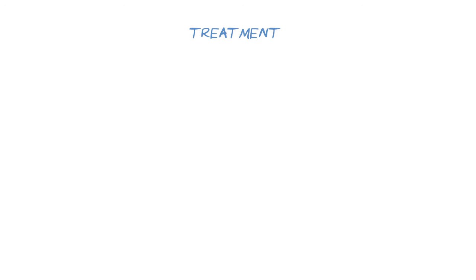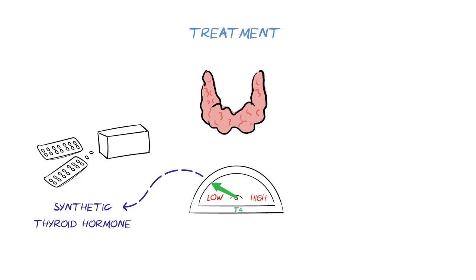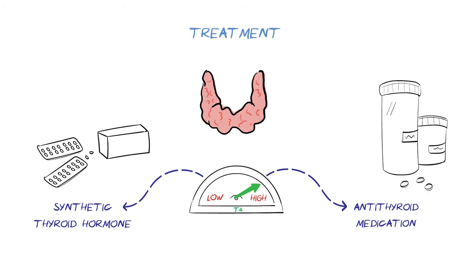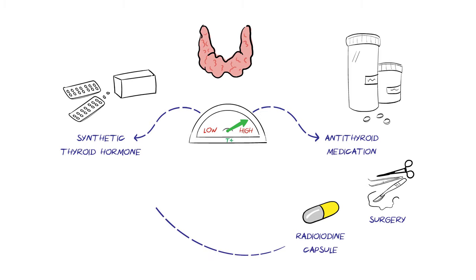How are thyroid disorders treated? The main aim of treatment is to ensure the right levels of thyroid hormones in the blood. If levels are too low, then synthetic thyroid hormone medication can be taken as a replacement. If levels are too high, antithyroid medication can be taken to dampen down the overactivity of the thyroid gland. Apart from medication, treatment for an overactive thyroid can also include taking a radioiodine capsule, which targets thyroid tissue, or surgery to remove some or all of the thyroid gland, which may also be recommended for a goiter or for nodules. Replacement medication may be needed after these treatments.